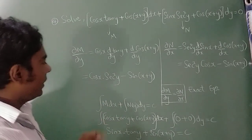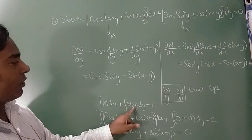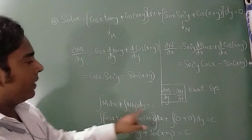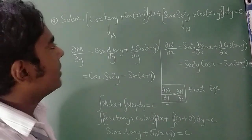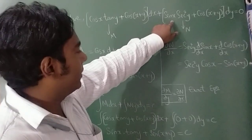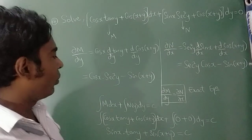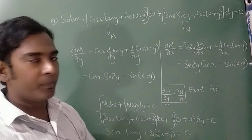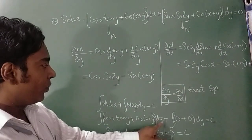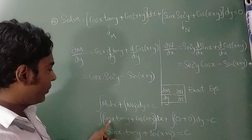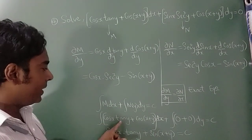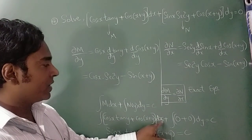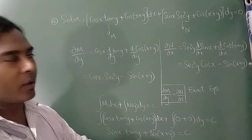To solve further, integration of M dx + integration of N (y-only terms) dy = C. N = sin x·sec²y + cos(x+y); both terms contain x, so I write zero. Integrating M with respect to x: integration of cos x = sin x, tan y remains as is; integration of cos(x+y) = sin(x+y). Final answer: sin x·tan y + sin(x+y) = C.